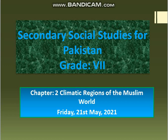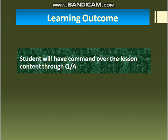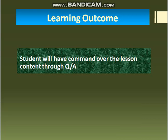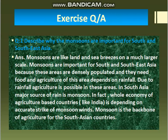Assalamu alaikum students. We are reading Secondary Social Studies for Pakistan, Grade 7, Chapter Number 2. The title is 'Climatic Regions of the Muslim World.' Today's date is Friday, 21st May 2021. The learning outcome is that after attending today's lecture, you will have command over the lesson content through question answers. We will do exercise question answers.